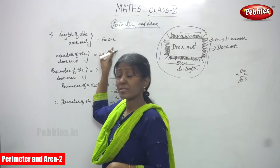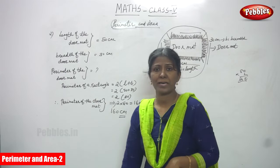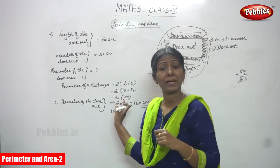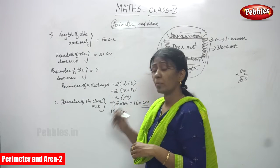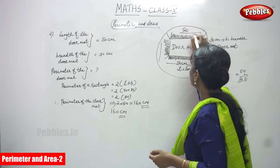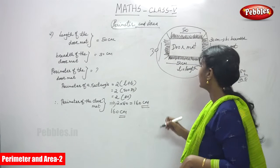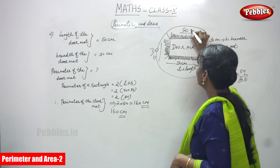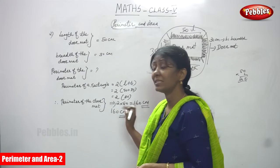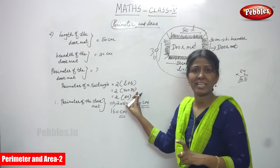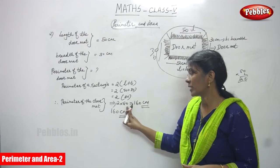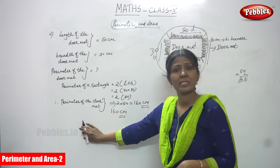To recap: the length of the doormat is 50 cm and the breadth is 30 cm. The doormat is always in a rectangle shape, so we apply the formula: perimeter of a rectangle = 2 into (L plus B). That means 2 lengths and 2 breadths, both equal on opposite sides. So 2 into (50 plus 30) — first priority is the bracket: 50 plus 30 equals 80, then 80 into 2 equals 160 cm. This is the answer.